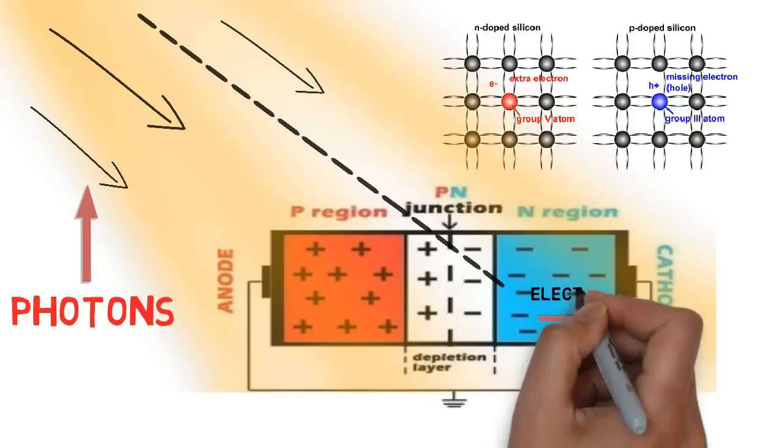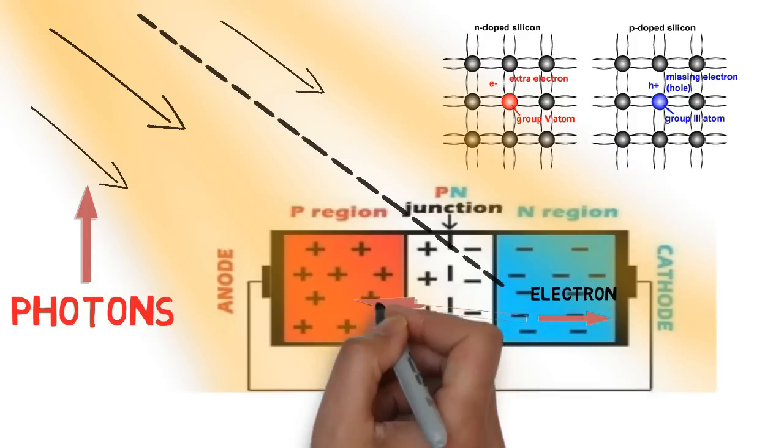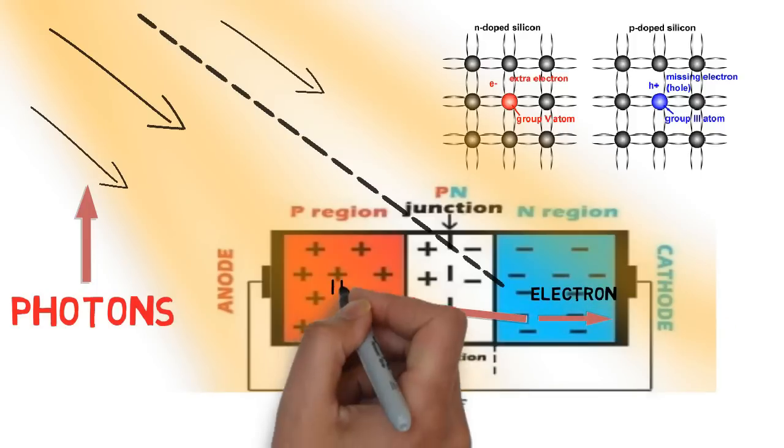Because of the electric field, the electron moves towards the N side and the hole moves towards the P side.